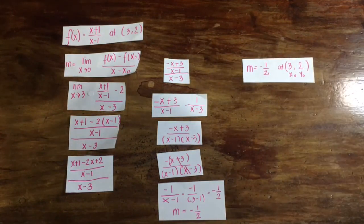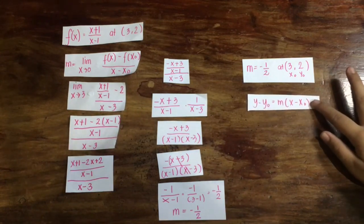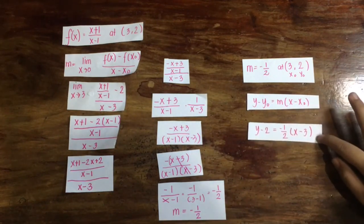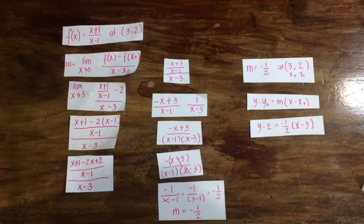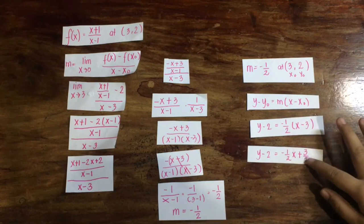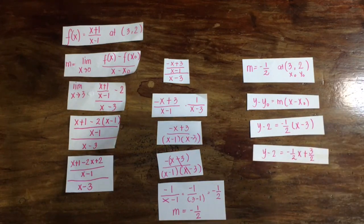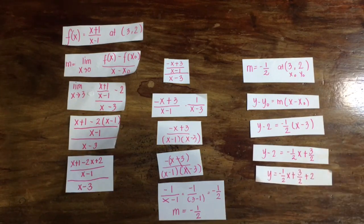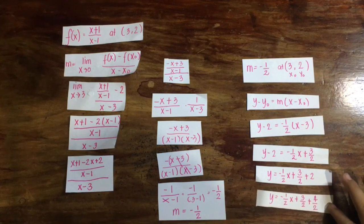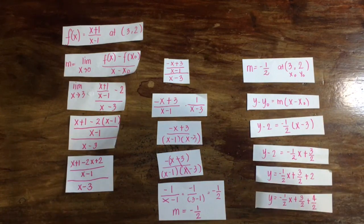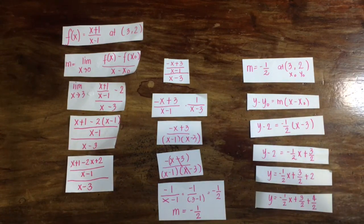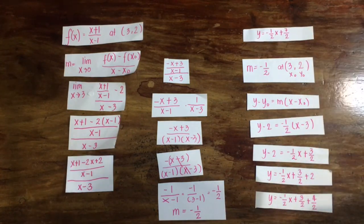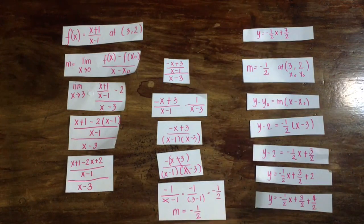Given the slope negative 1 half at point (3, 2), we substitute into the point-slope formula and obtain y minus 2 equals negative 1 half multiplied by x minus 3. Distributing negative 1 half, we get y minus 2 equals negative 1 half x plus 3 halves. Using the addition property, we move negative 2 to the right side, combining negative 1 half x plus 3 halves plus 4 over 2. The equation of the tangent line is y equals negative 1 half x plus 7 over 2.